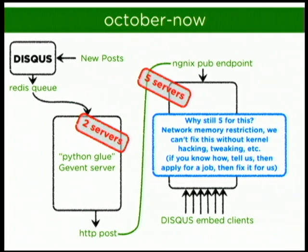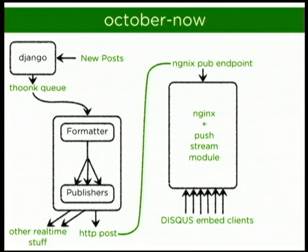We could actually run that front-end cluster on three servers including redundancy, but we're running into kernel/network memory limitations — a socket allocation problem that's on our backlog. We're a small team and just haven't tackled it yet. This is the C10 million problem people are talking about on the internet.